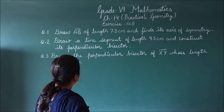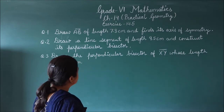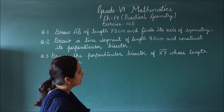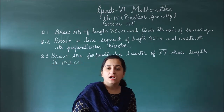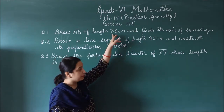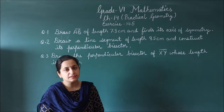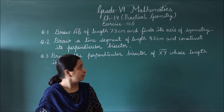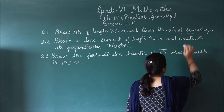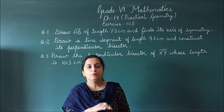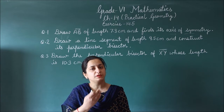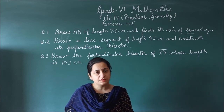Question number one: draw AB of length 7.3 cm and find its axis of symmetry. You have to draw a segment of 7.3 cm and find its axis of symmetry. If you draw a horizontal line, its axis of symmetry will be a vertical line.